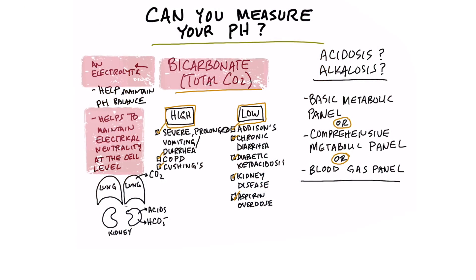You will normally measure bicarbonates when you get a basic metabolic panel — a BMP — or a CMP, a comprehensive metabolic panel, or if you get a blood gas panel. Typically you'll get this information from a basic or comprehensive metabolic panel, and they'll give you the range between normal and abnormal so you can see if you are low or too high.